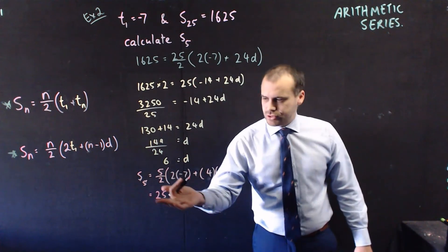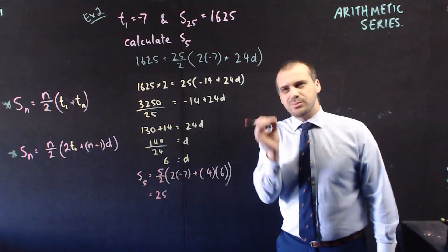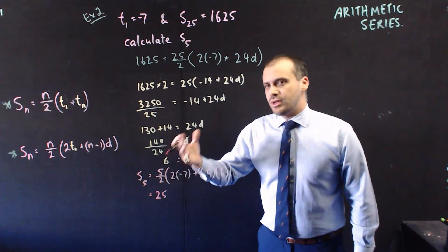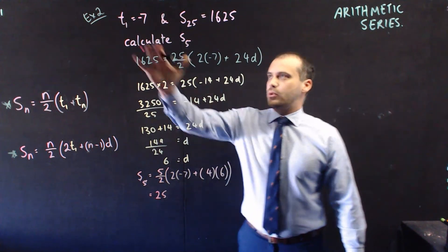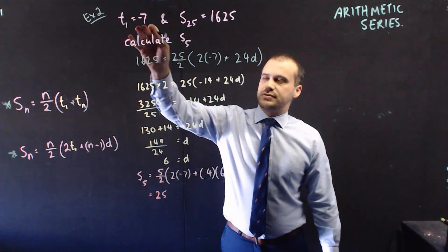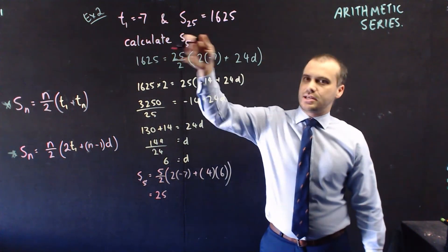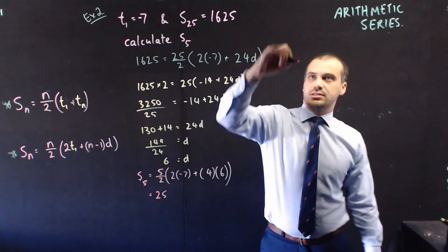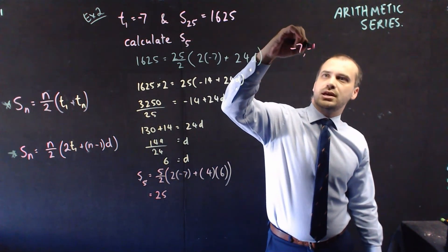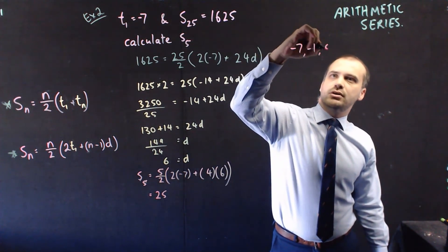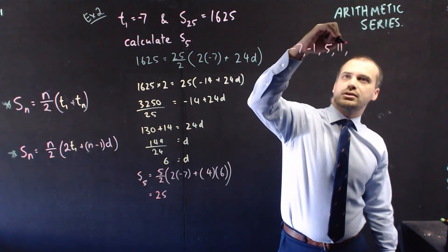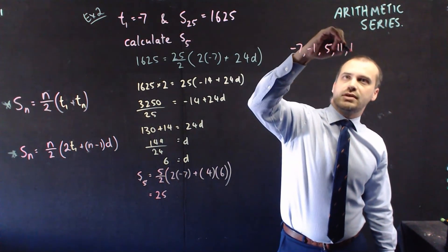Calculate it. And the answer is 25. Now, 25 seems small for a sum, but think about what this sequence actually looks like. It starts with negative 7 and has a difference of 6, so it would be negative 7, negative 1, 5, 11, and 17.